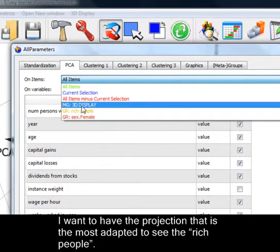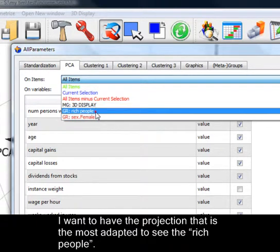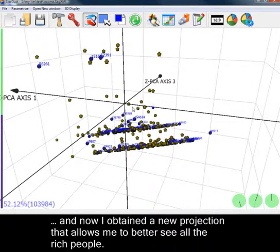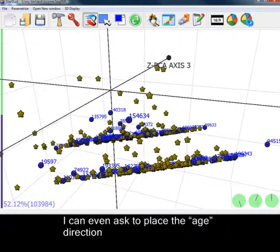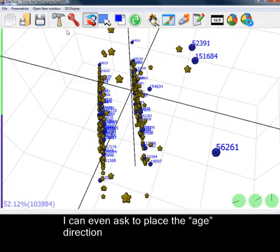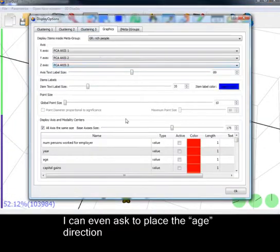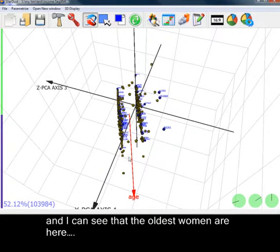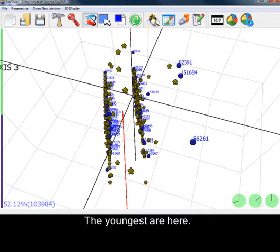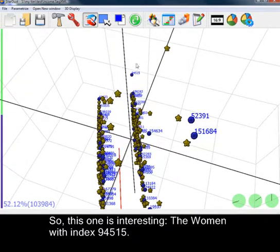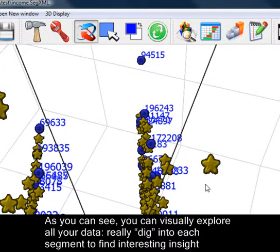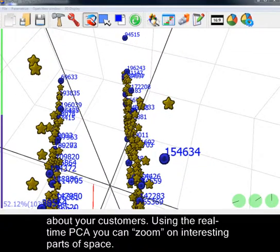PCA. I want to have the projection that is the most adapted to the rich people. And now, I obtained a new projection that allows me to better see all the rich people. I can even ask to place the age direction, and I can see that the oldest women are here. The youngest are here. So, this one is interesting. The women with index 94515. As you can see, you can visually explore all your data. Really dig into each segment to find interesting insight about your customers.